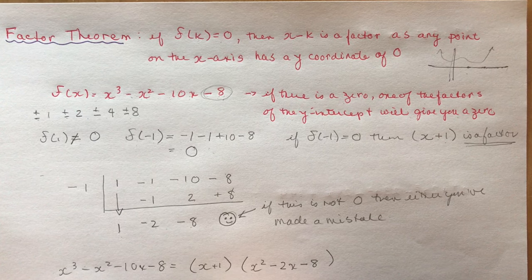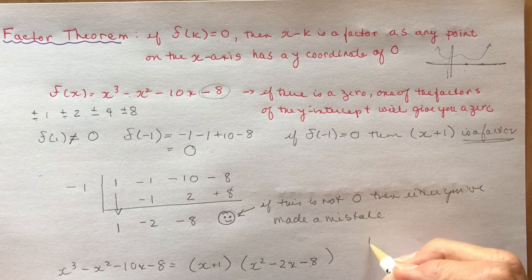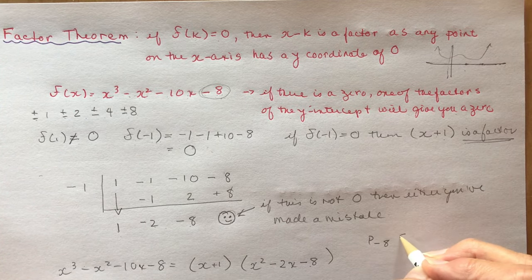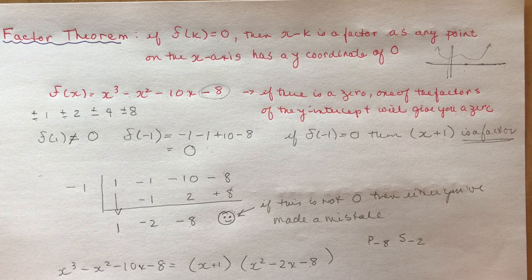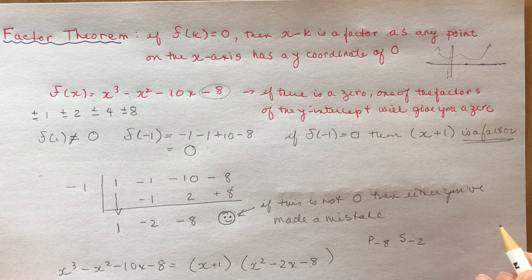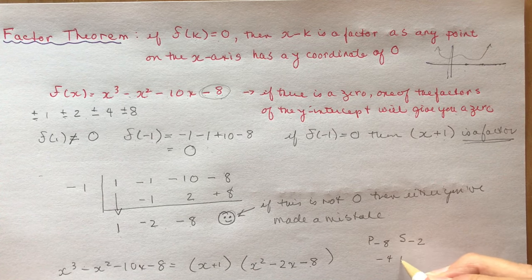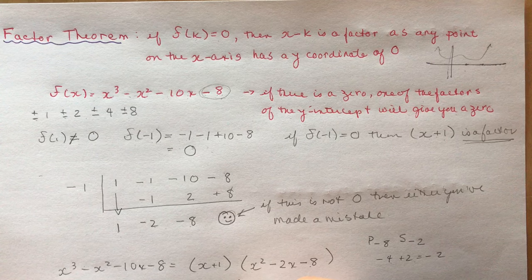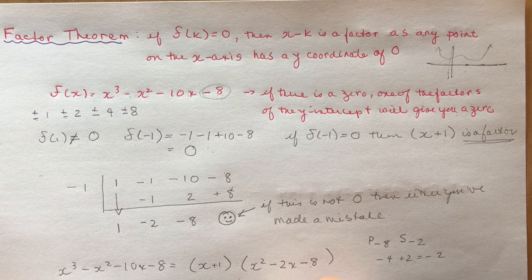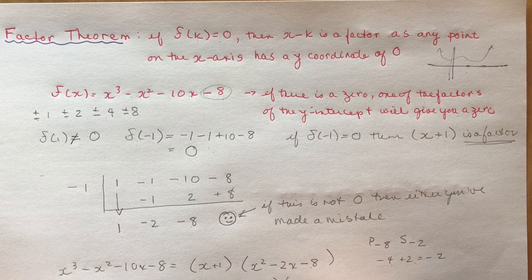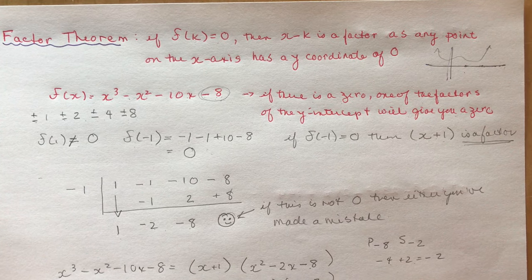So we get x squared minus 2x minus 8. Now I want to factor this. What has a product of minus 8 and a sum of minus 2? Well, it's got to be negative 4 and 2, right? Negative 4 plus 2 is negative 2. So I have x minus 4 and x plus 2. And there you go — now I've got it all factored.